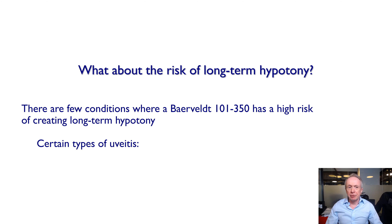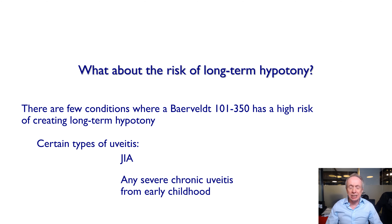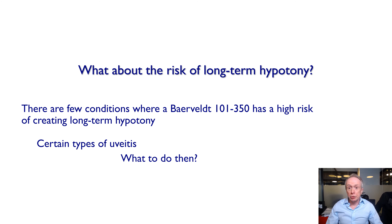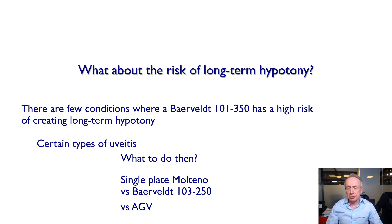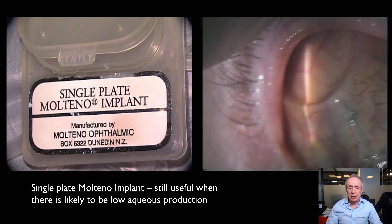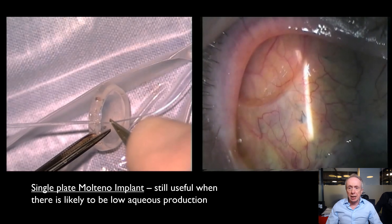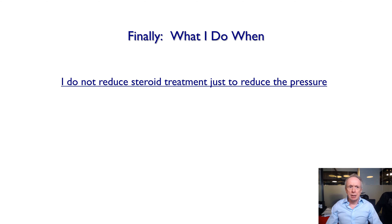What about the risk of long-term hypotony? In general, the Baerveldt 350 works well in uveitis, and it would be wrong to say they're all at high risk of hypotony. However, there are certain types of uveitis where there is a high risk of hypotony and the Baerveldt 350 is just too much in the long term — these include JIA and any severe uveitis dating to early childhood. So, the patient in their 30s who had uveitis from age four: don't put in a Baerveldt 350. The patient in their 30s who has had uveitis for two or three years: a Baerveldt 350 is quite reasonable. For those at moderate risk of hypotony, I move down to a Baerveldt 250 or the Ahmed valve. For very severe uveitis from early childhood, I will still use a single-plate Molteno implant — we keep a couple on the shelf — and stent them as shown here.